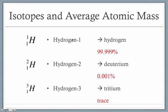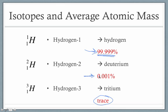Going back to the hydrogen data, we can now add percent abundance information. Hydrogen-1 is by far the most abundant at 99.999%. Deuterium (hydrogen-2) is the next most abundant at 0.001%. Tritium (hydrogen-3) occurs so infrequently it is described simply as a trace — a number too small to measure accurately. This explains why our straight average gave us 2, while the real average on the periodic table is closer to 1: the average gets pulled toward the most abundant mass.